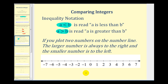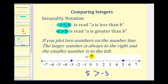So for example, if we want to compare five to negative three — here's positive five and here's negative three — five is greater than negative three, because five is to the right of negative three. Remember, this is equivalent to saying negative three is less than five. Notice how the inequality points to the negative three in both cases, or it opens toward the five in both cases.